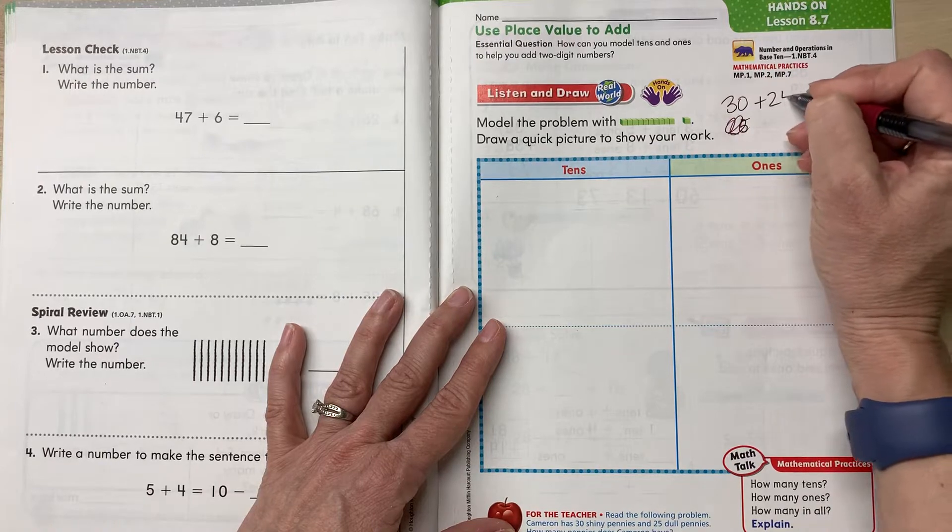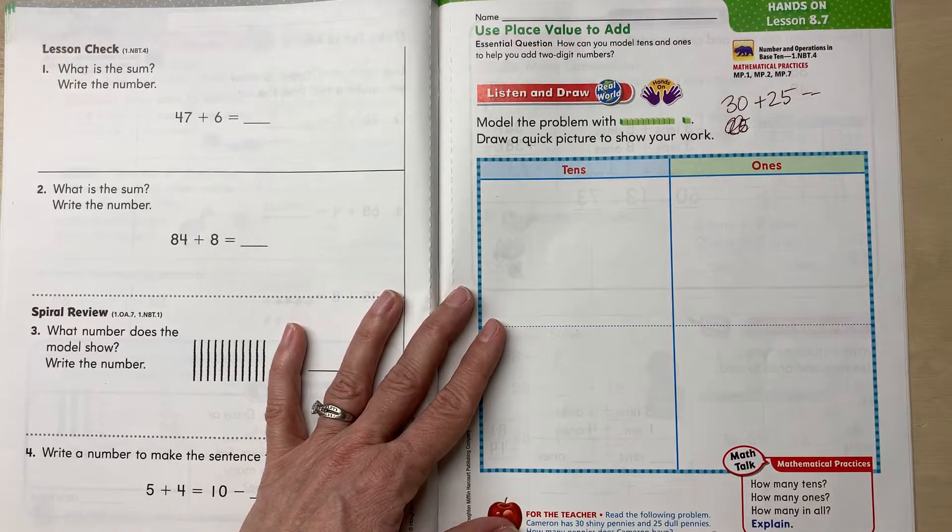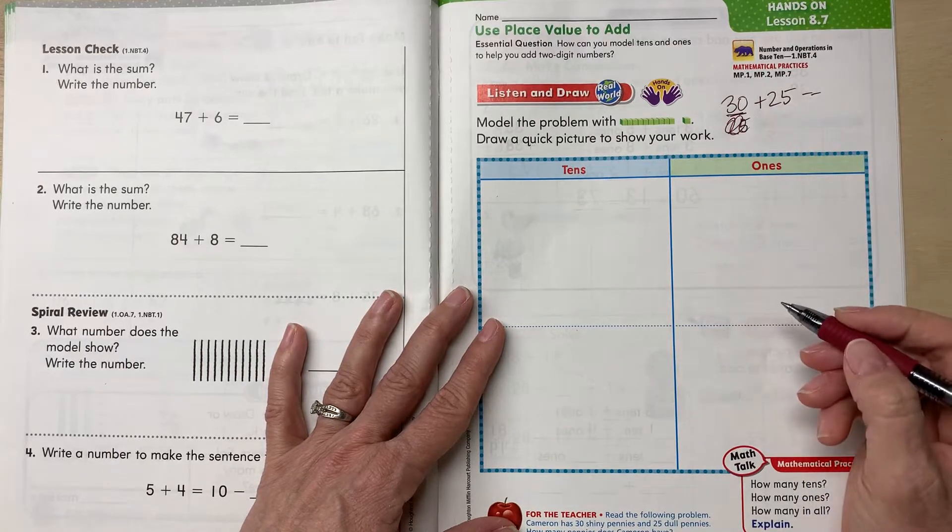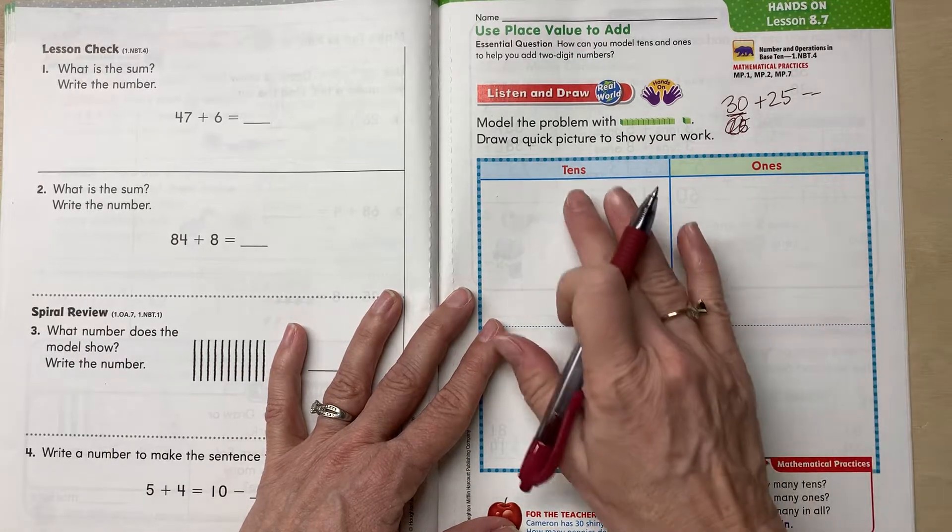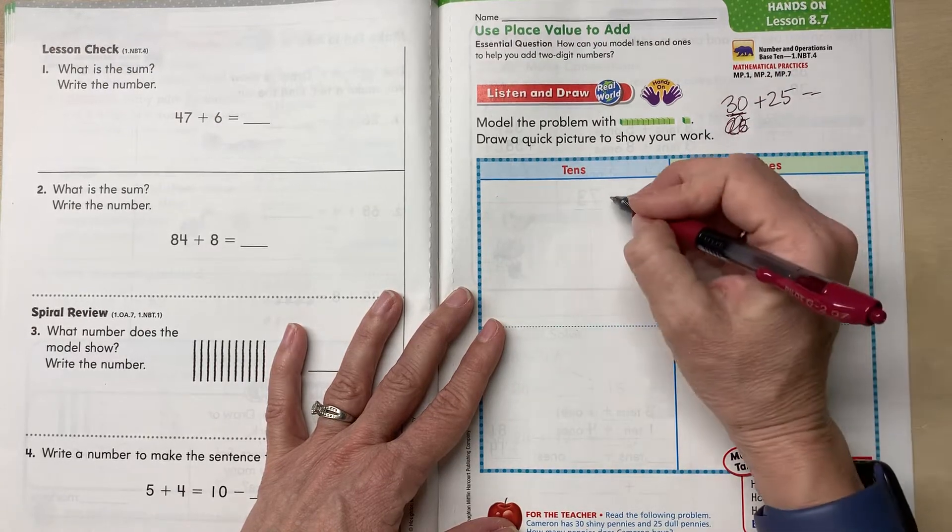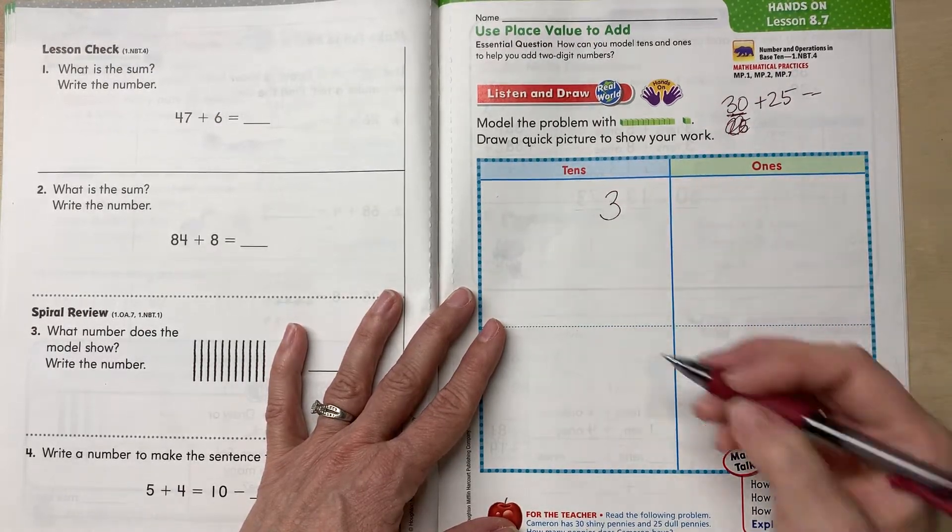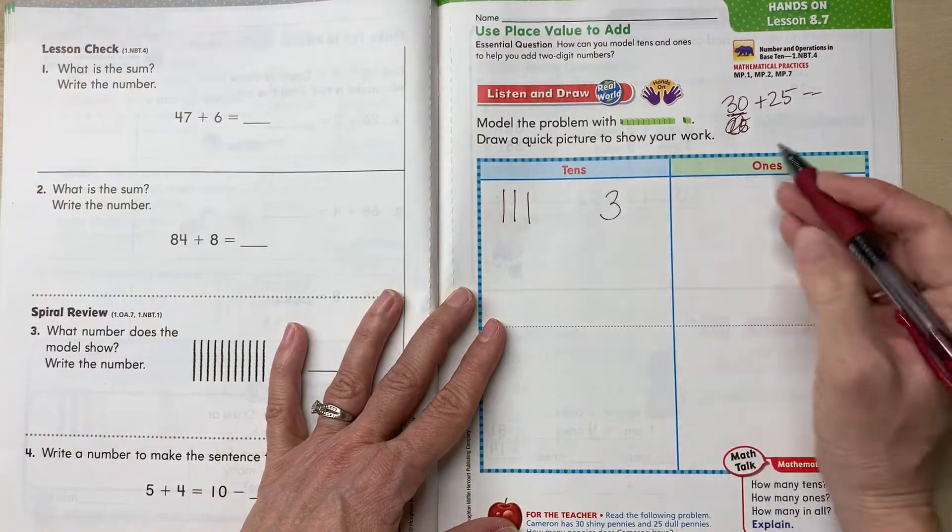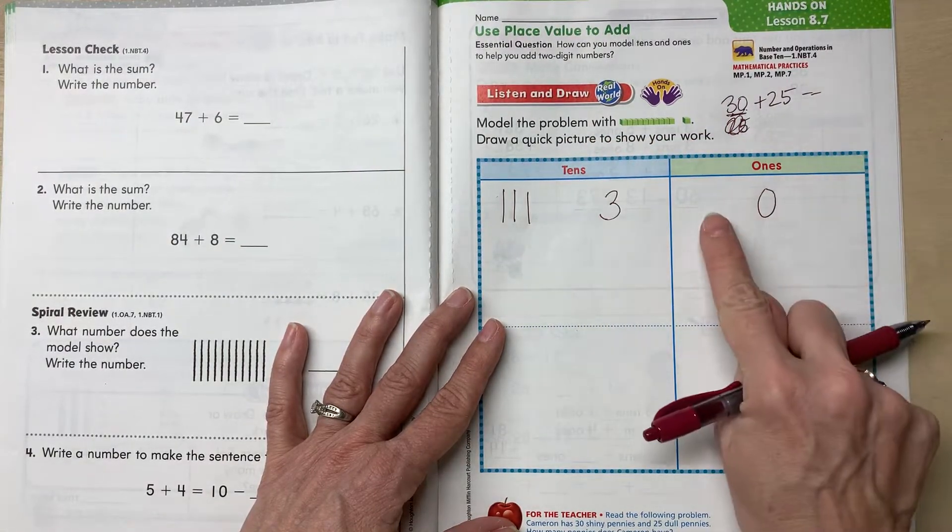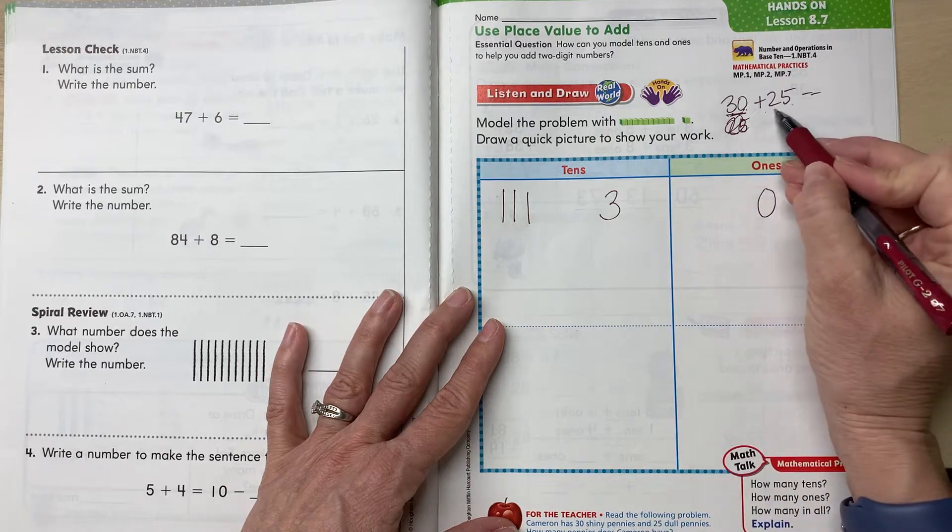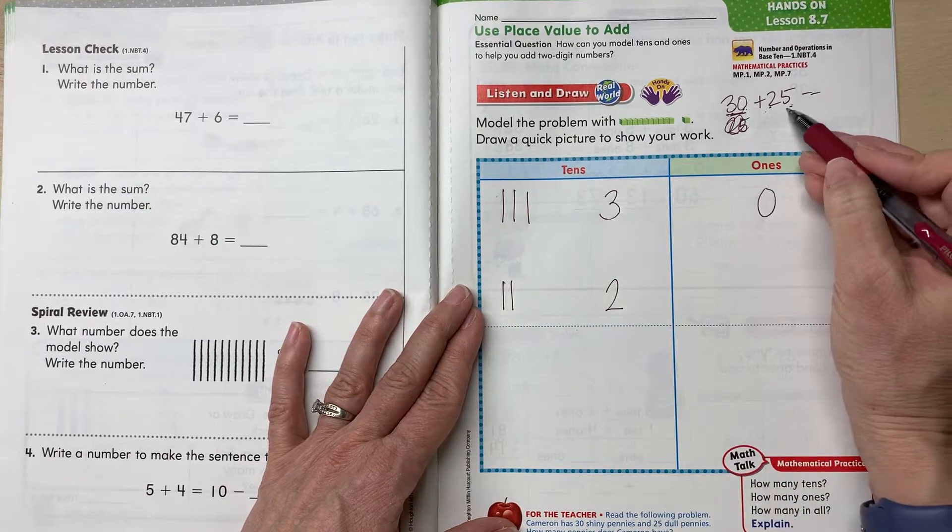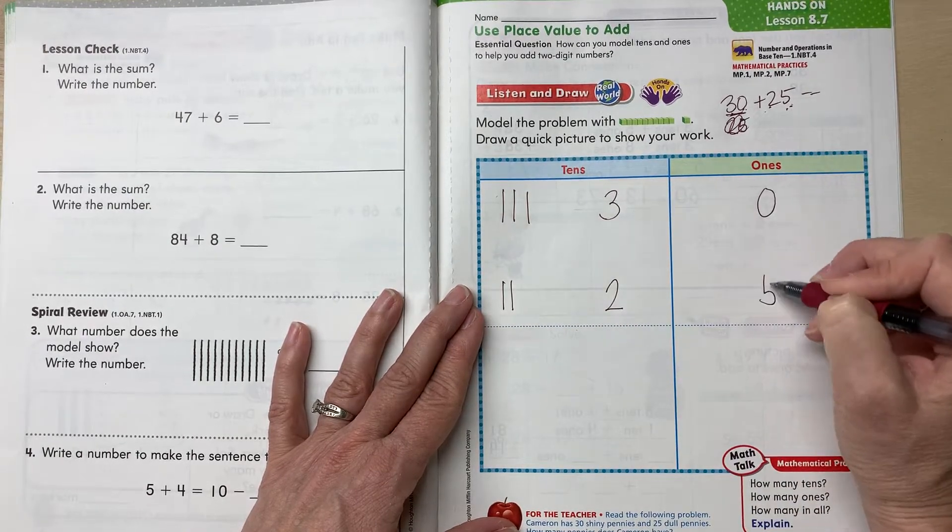So we're actually doing 30 plus 25. So let's start with drawing a picture for 30. And what we can do is how many tens are in 30? Three. So three tens, and how many ones in 30? Zero ones, no ones. And 25 is two tens, and how many ones? Five.